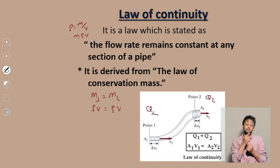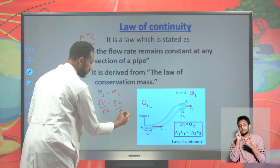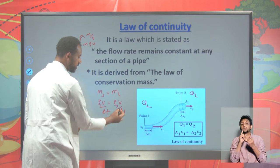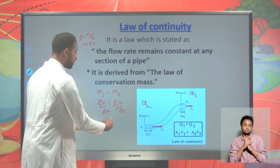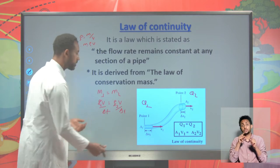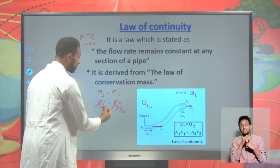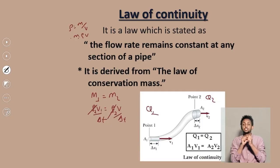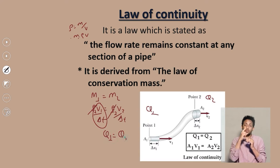Taking water as the fluid, the density at section 1 and density at section 2 remains constant because the density of water doesn't change. We are mainly focused on fluids with slight compression so that density remains constant. Therefore, volume per unit time at section 1 equals volume per unit time at section 2 — and volume per unit time is flow rate. So flow rate at section 1 equals flow rate at section 2.